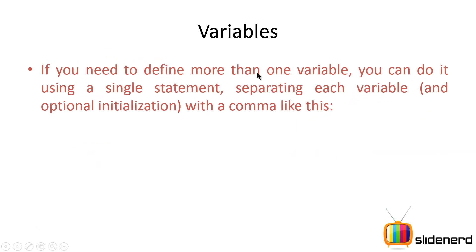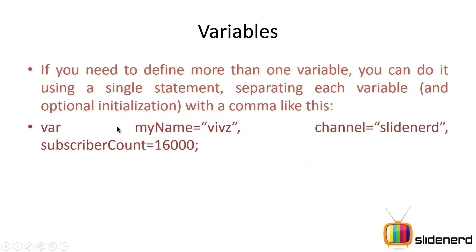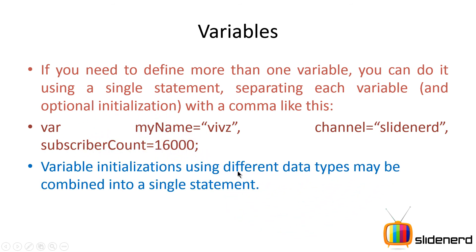When you declare a variable outside any function or block, it's called a global variable. When you declare a variable within a function, it's called a local variable because it's available only within that function. The var keyword always defines variables inside the parentheses in which you are currently located, which means outside that you cannot access it. That variable gets destroyed — wiped out from memory — as soon as your function is over. If you need to define more than one variable, you can do it in a single statement with a comma.